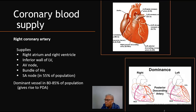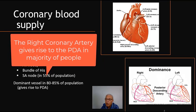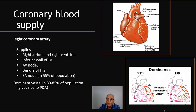Coronary arterial dominance is defined by the vessel which gives rise to the posterior descending coronary artery, which supplies the inferior third of the interventricular septum. In approximately 80 to 85 percent of the population, the heart is right dominant — meaning the PDA is supplied by the right coronary artery. In the minority of cases, the PDA comes from the left coronary artery.